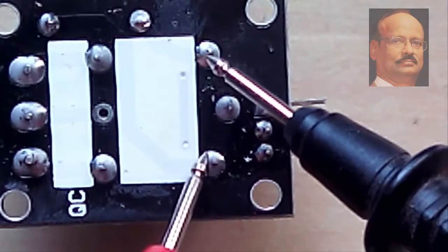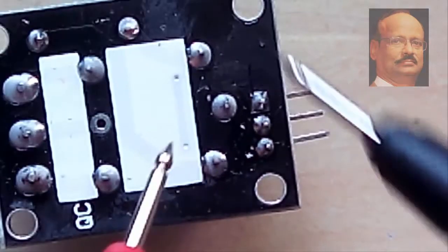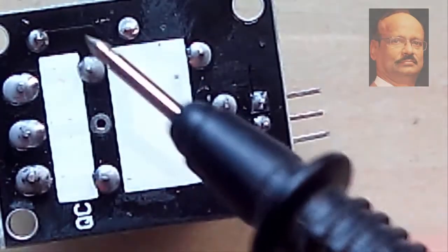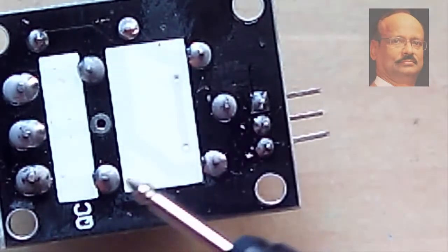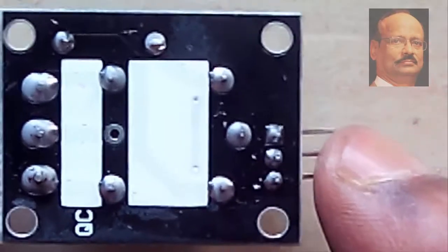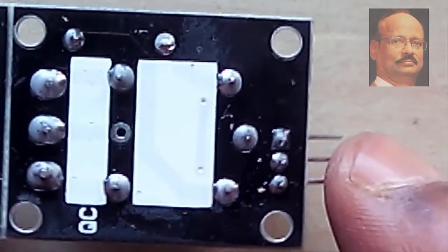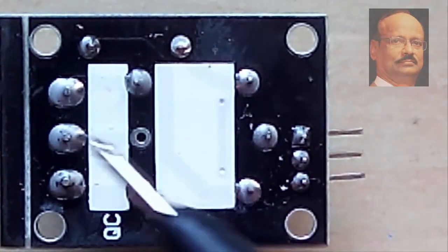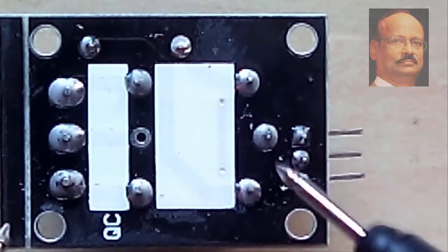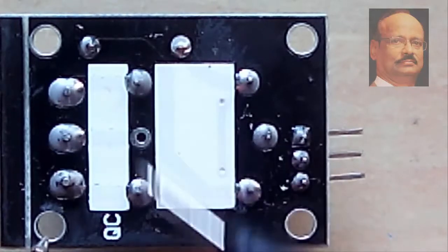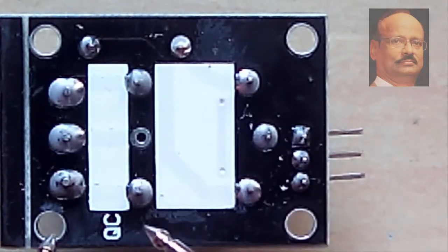Now these two points are coil points, this is the common point, and these two points, one is NO and one is NC.